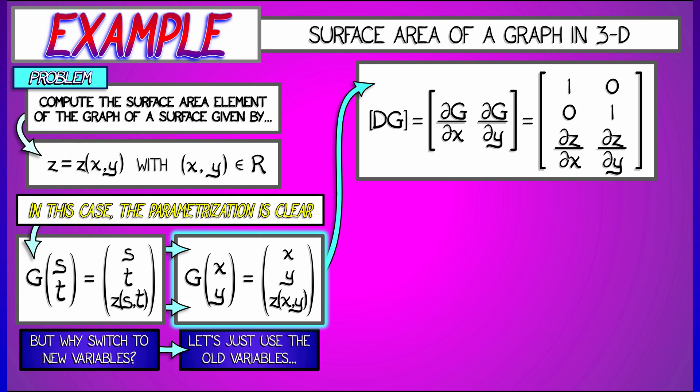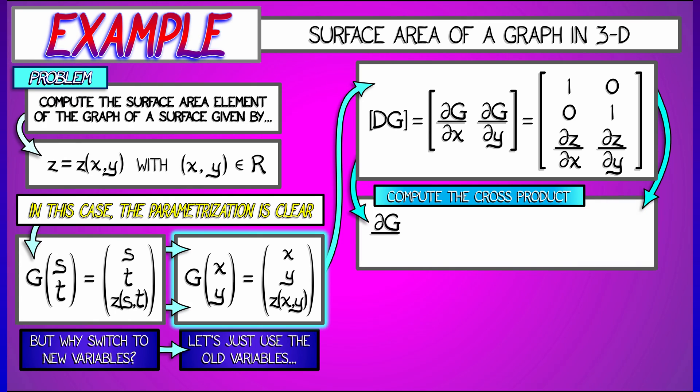And with this now, we can take the cross product of these two column vectors. And what do we get in this case? We get minus partial z partial x times i minus partial z partial y times j plus 1 times k.